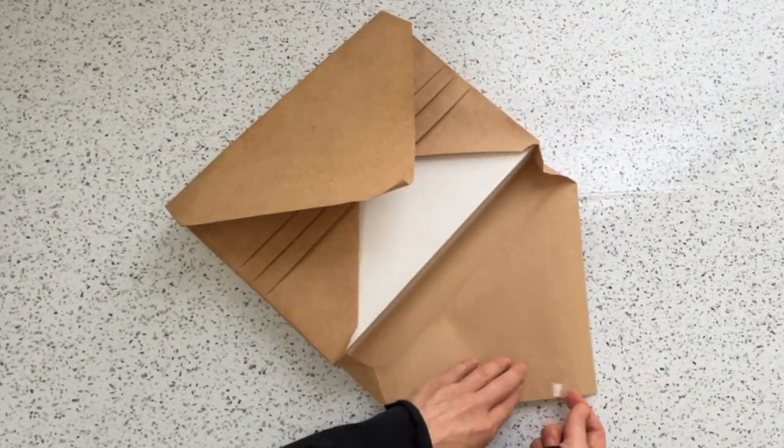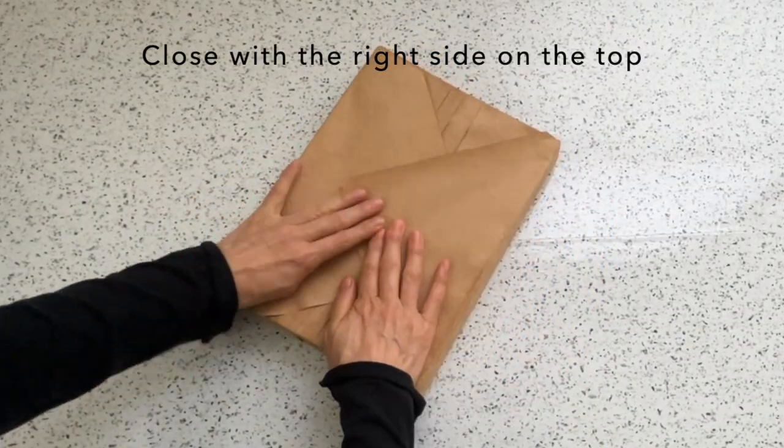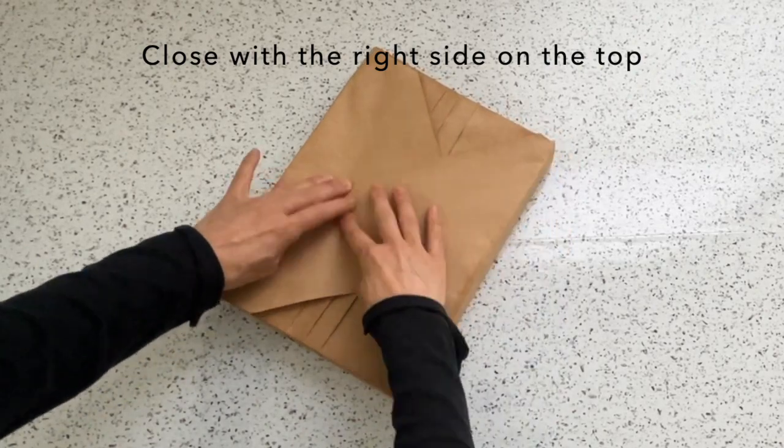Put double-sided tape to the corner of the right flap. For the same reason, always close the right side on top when celebrating.